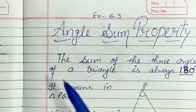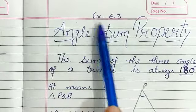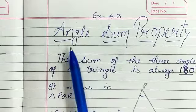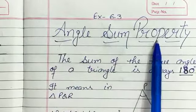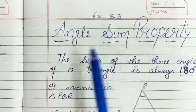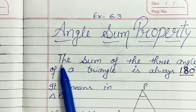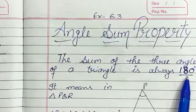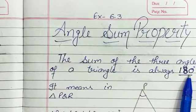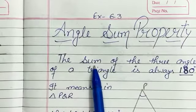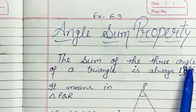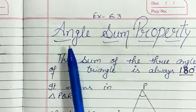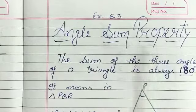Very good morning, students. Today we will do exercise 6.3. In exercise 6.3, we will learn about the angle sum property of a triangle. The sum of the 3 angles of a triangle is always 180 degrees — that is the angle sum property of a triangle.